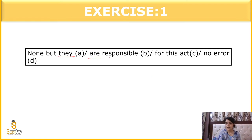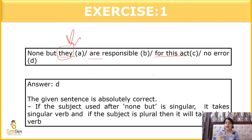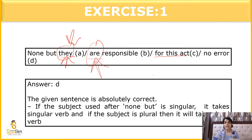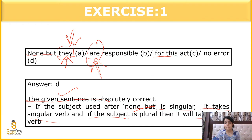Question 1: 'None but they are responsible for this act.' No error. This statement is totally correct. 'They' is used when we talk about more than one person. If it were one person, 'he,' 'she,' or 'it' could come. The rule is: if the subject used after 'none but' is singular, it takes a singular verb; if the subject is plural, it takes a plural verb. So 'they are' is correct here.